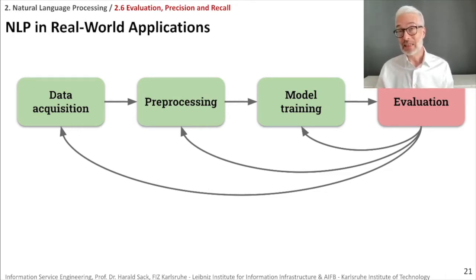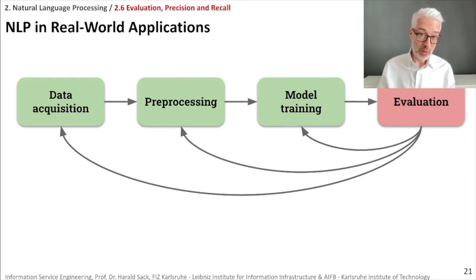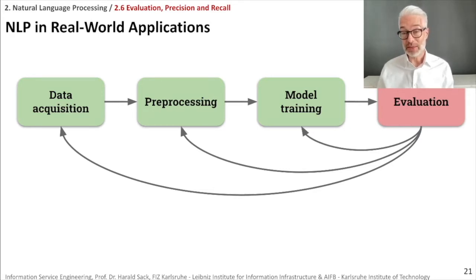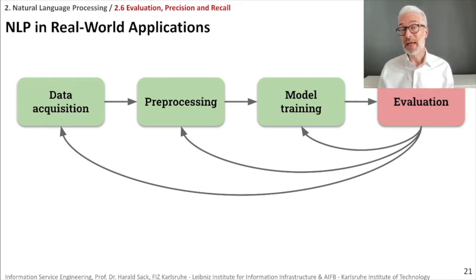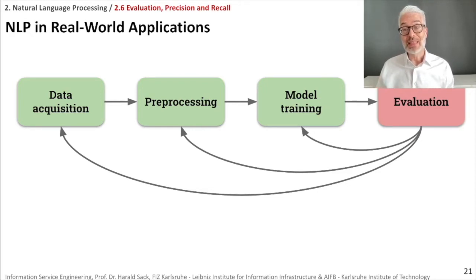After pre-processing, it comes to training a specific model with the NLP task. The model decides, for example, what type or category of word we are looking at, the sense of a specific word, or which entity in a knowledge base it can be connected to — depending on what kind of NLP task you want to solve. In the end you have to quantify your results through evaluation, which tells you whether your model is sufficiently performing or whether you can improve it by adding more data, changing pre-processing steps, or training the model with a different set of parameters. This is an iterative process.